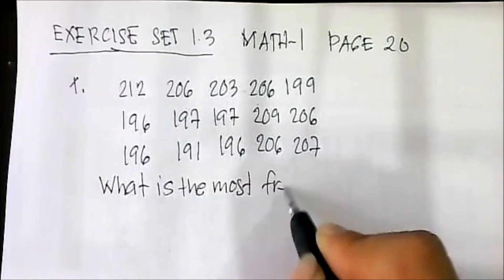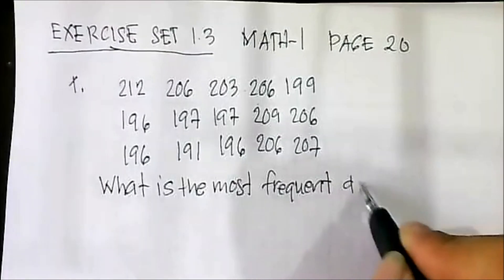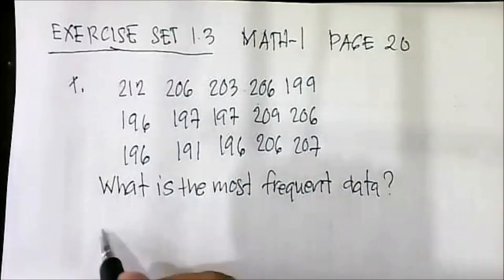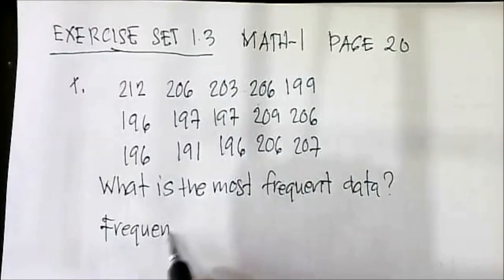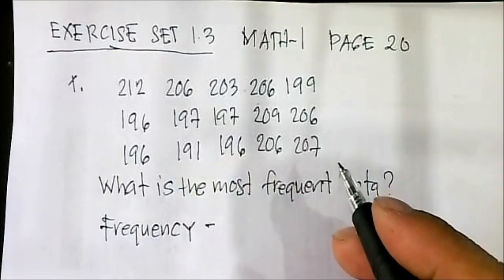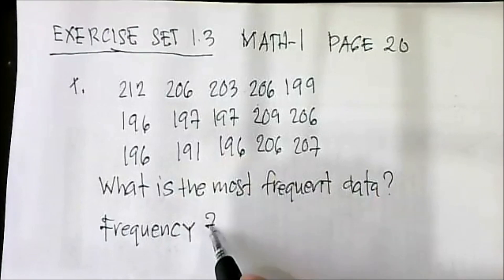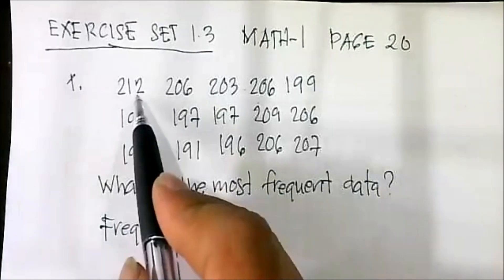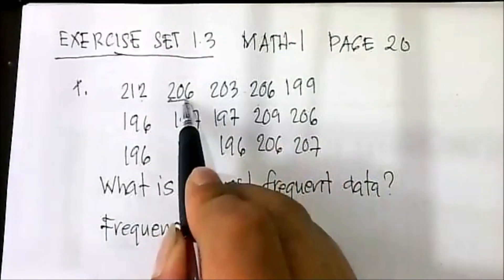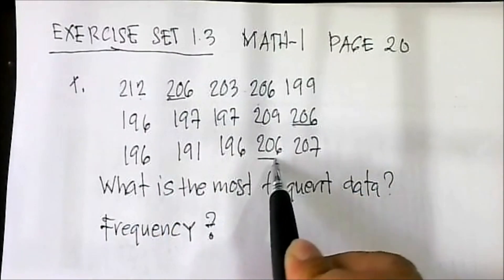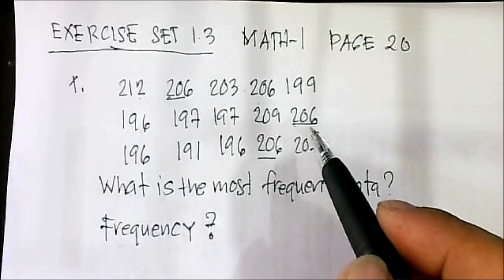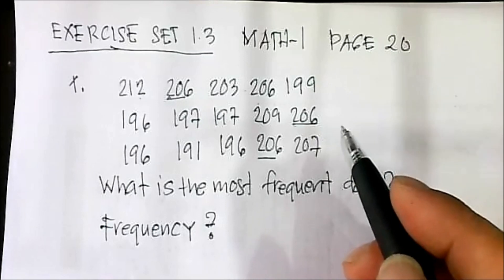The question is: what is the most frequent data? The most frequent data, or the frequency of the given data, is the input data that appears most frequently — that is what we call the mode. Let's check: 206 appears 1, 2, 3 times so far.